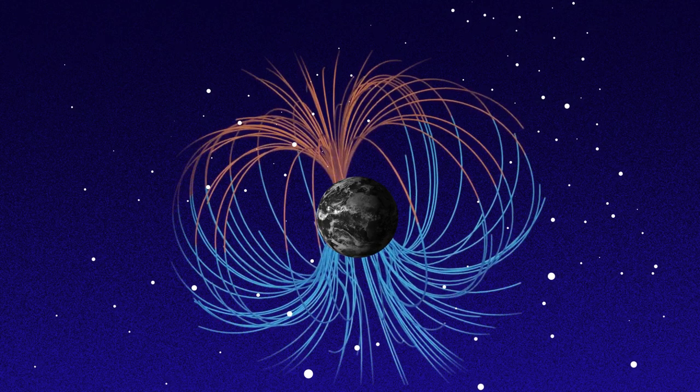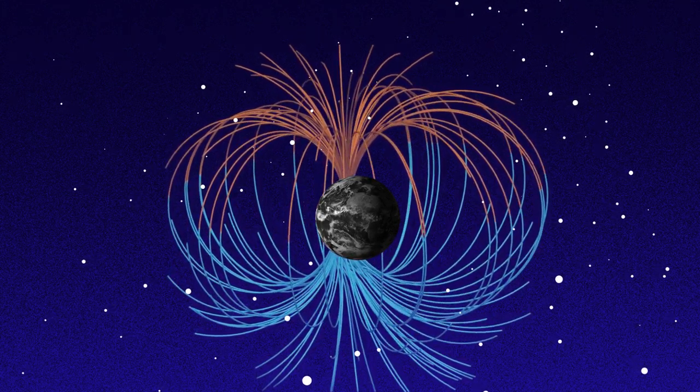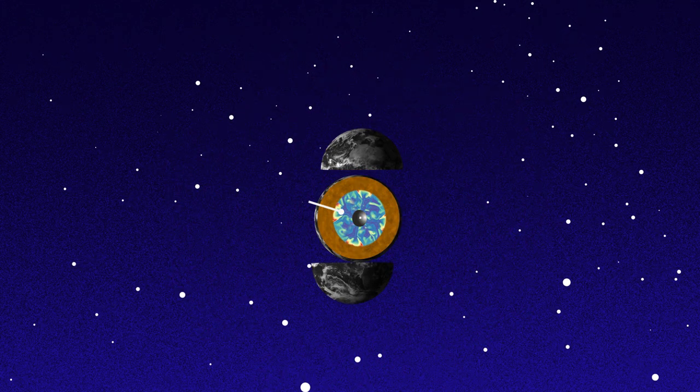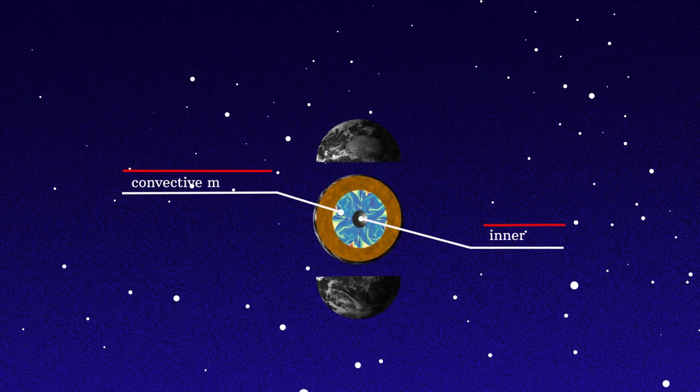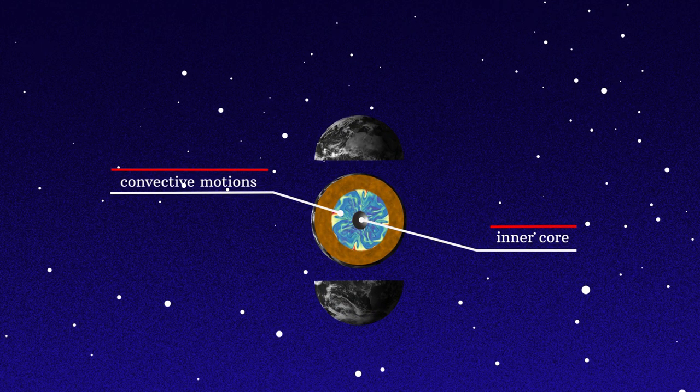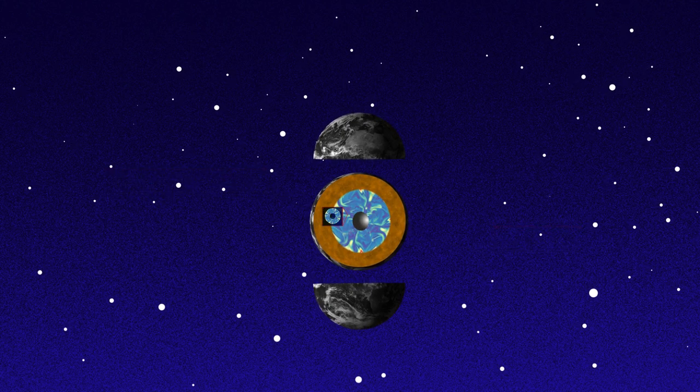The dynamo effect sustains the Earth's magnetic field thanks to convective motions inside the Earth's liquid core. The convection, an inherently turbulent phenomenon, might however be interacting with a much more quiescent layer.